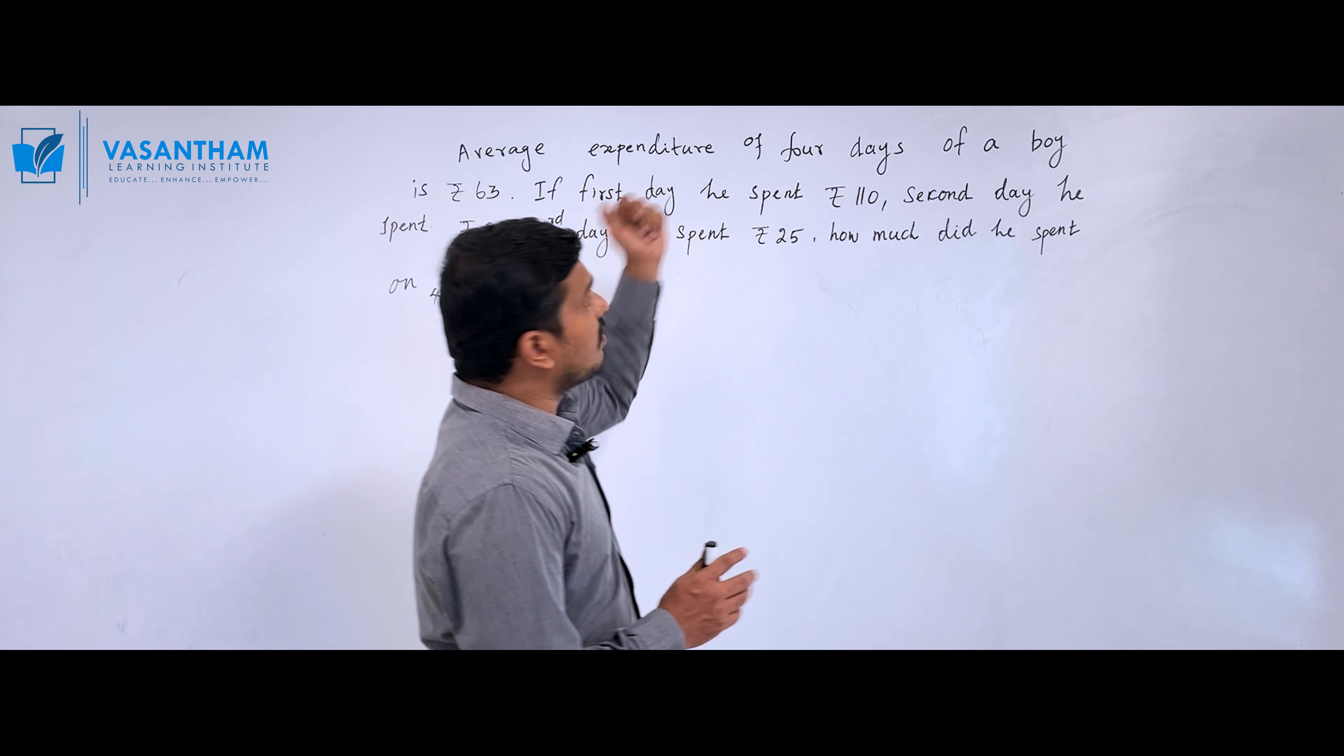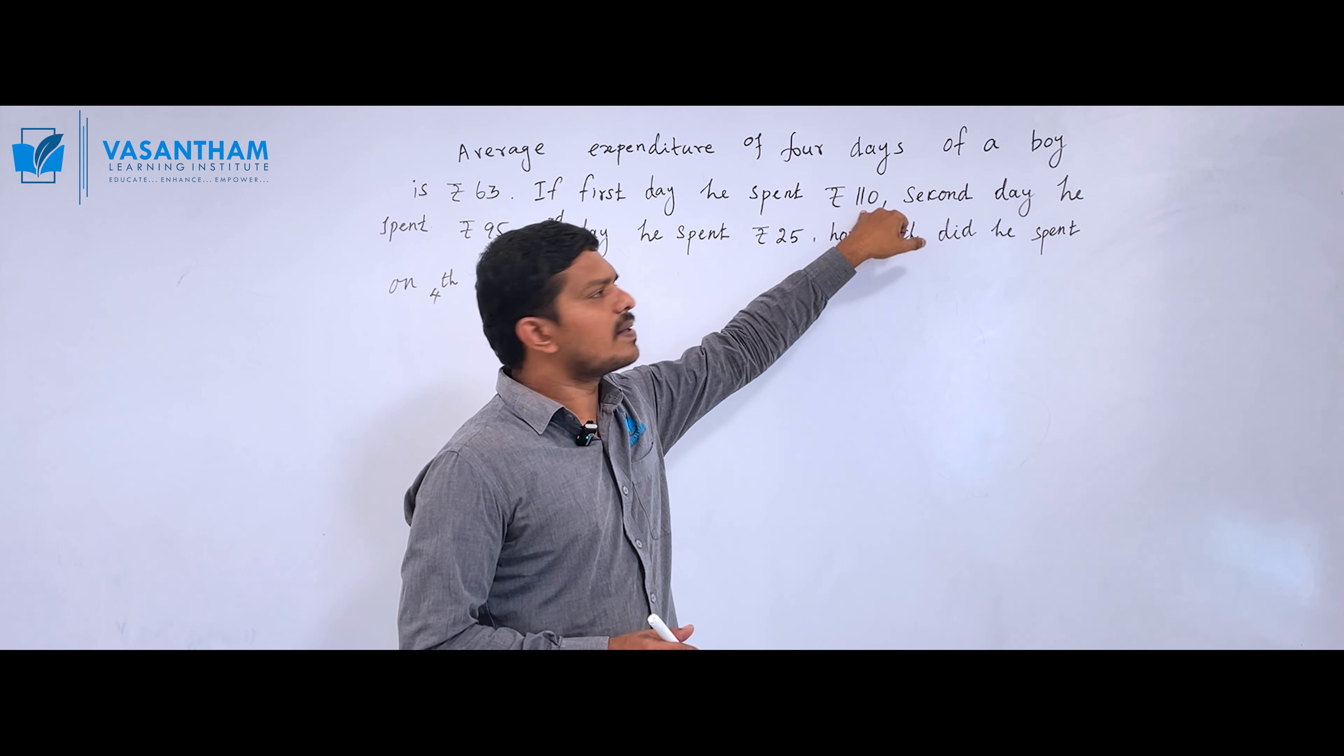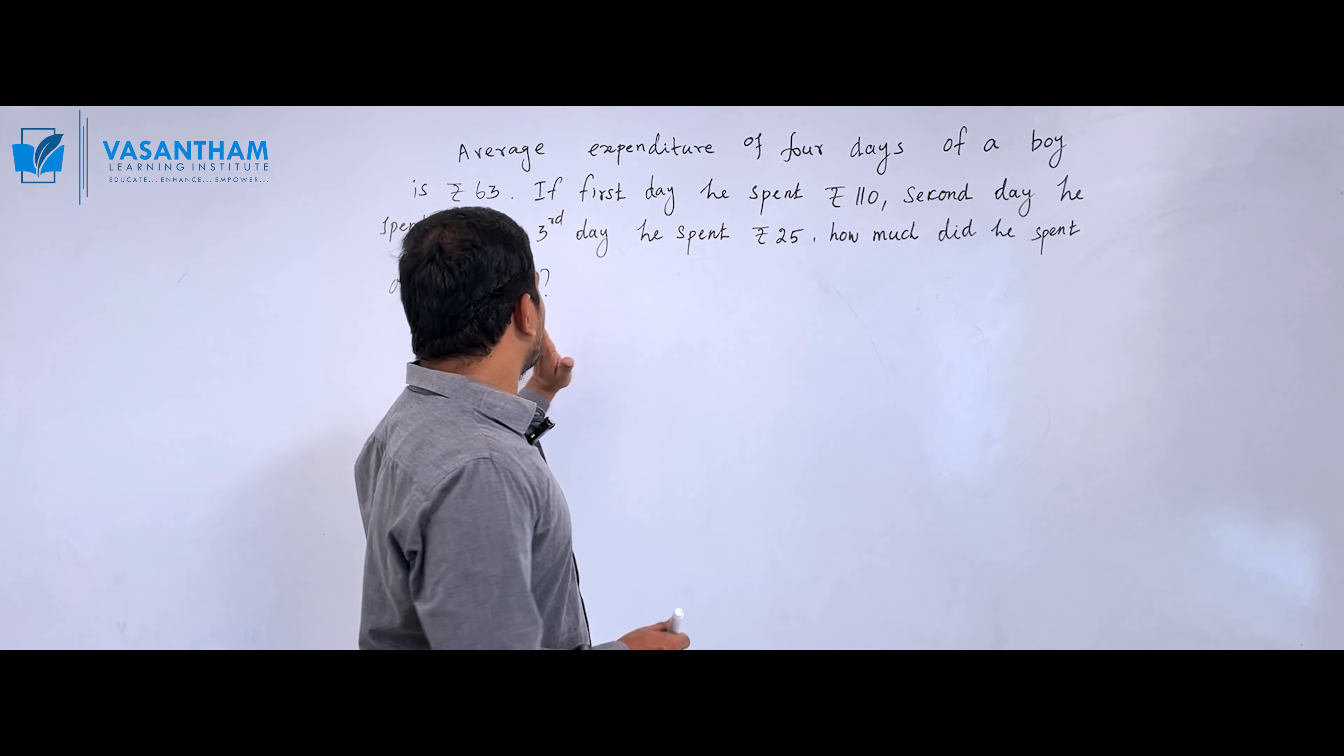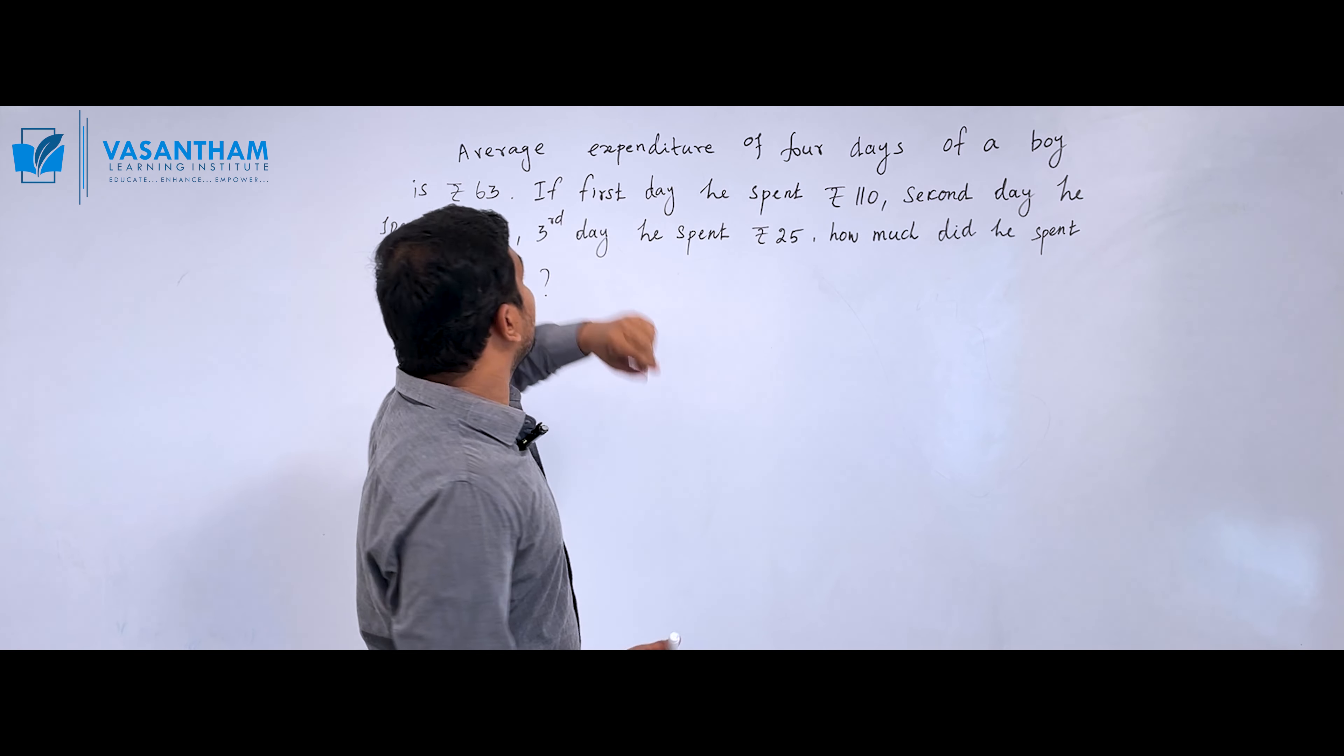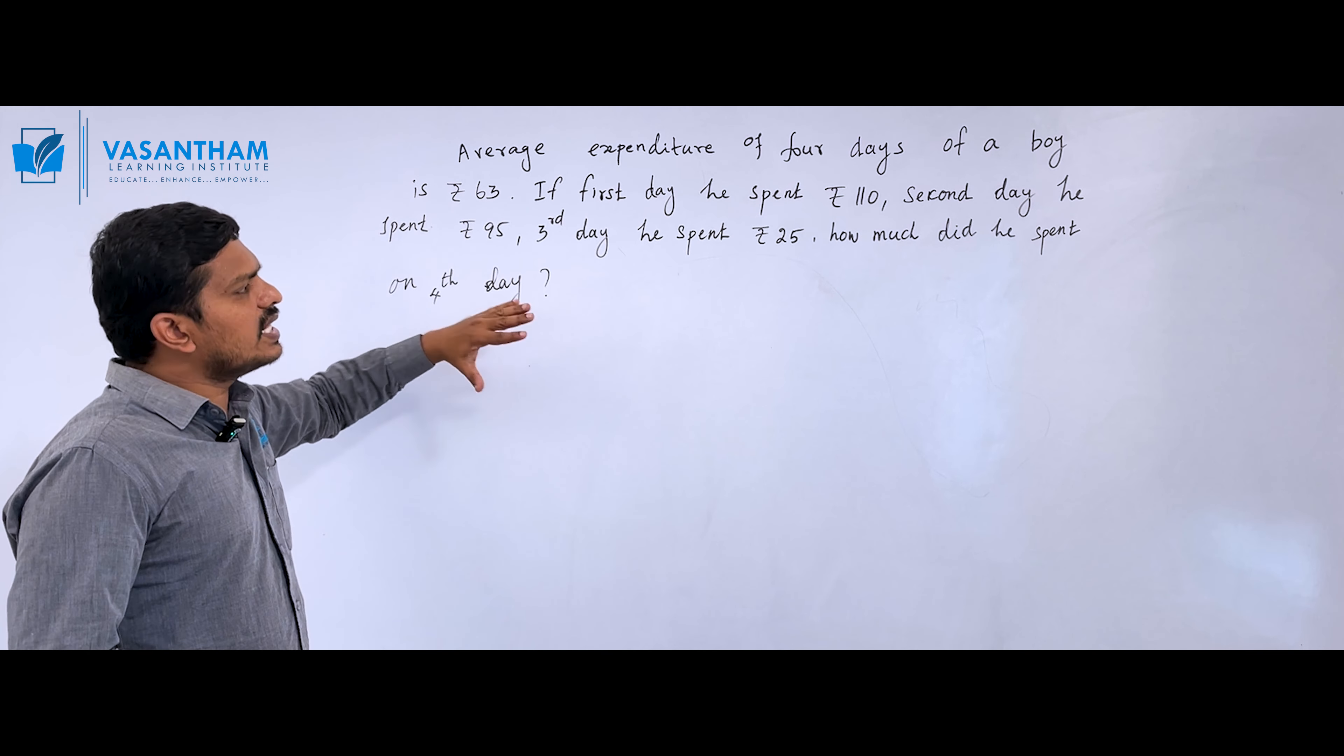The same situation applies here. First day is 110 rupees, second day is 95 rupees, third day is 25 rupees. Fourth day is unknown, but the average for all four days is 63 rupees.